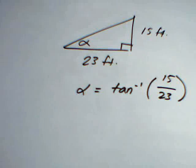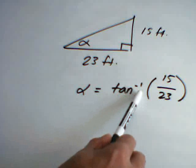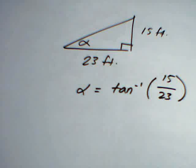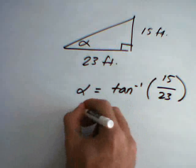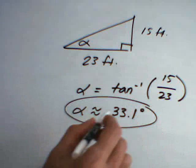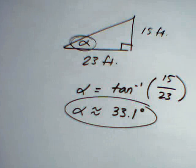Now, on your calculator, you'll probably have to do something like hit the second button before you hit the tangent button, which will give you this inverse tangent feature. You'll notice the little negative one as a superscript. So, we'll do the inverse tangent of 15 divided by 23. And that should give you approximately 33.1 degrees. That means that this angle is approximately 33.1 degrees.